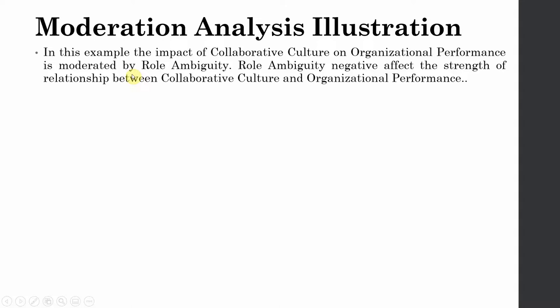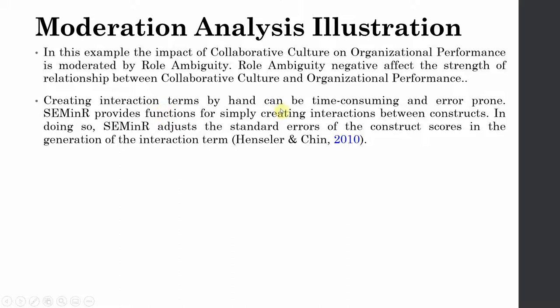Now we are going to look at how to perform moderation analysis in R. In this example, the impact of collaborative culture on organizational performance is moderated by role ambiguity. Role ambiguity negatively affects the strength of the relationship between collaborative culture and organizational performance. Creating an interaction term by hand can be time consuming and error prone. Seminr provides functions for simply creating interactions between constructs and adjusts the standard errors of the construct scores.